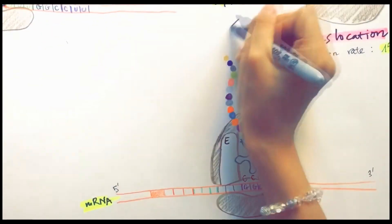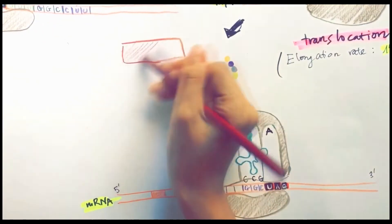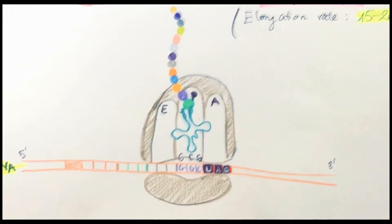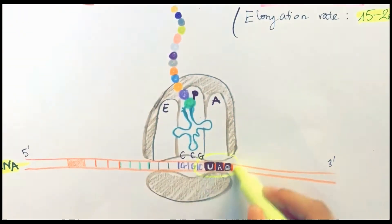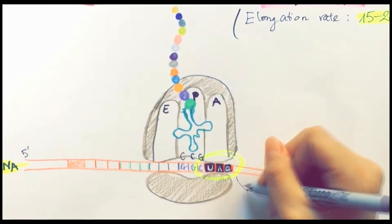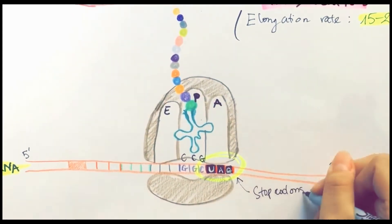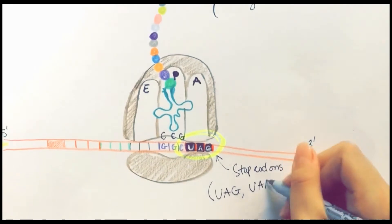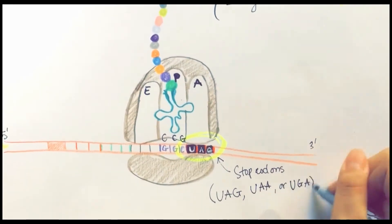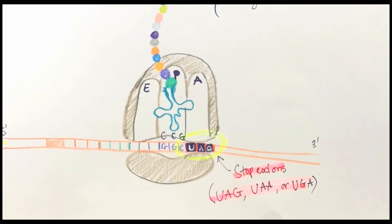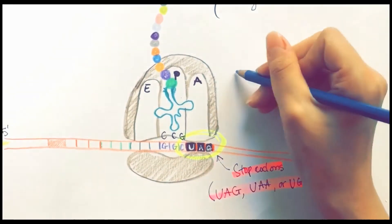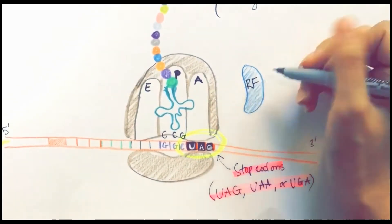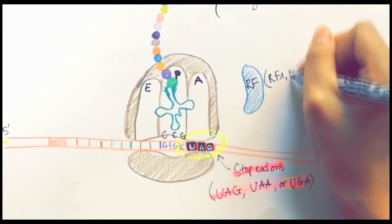The final stage is termination, and it occurs when one of the stop codons — either UAA, UAG, or UGA — is reached at the A-site. No tRNA can fit in the A-site at that point, as there is no tRNA that can match that sequence. Instead, these codons are recognized by proteins known as release factors.